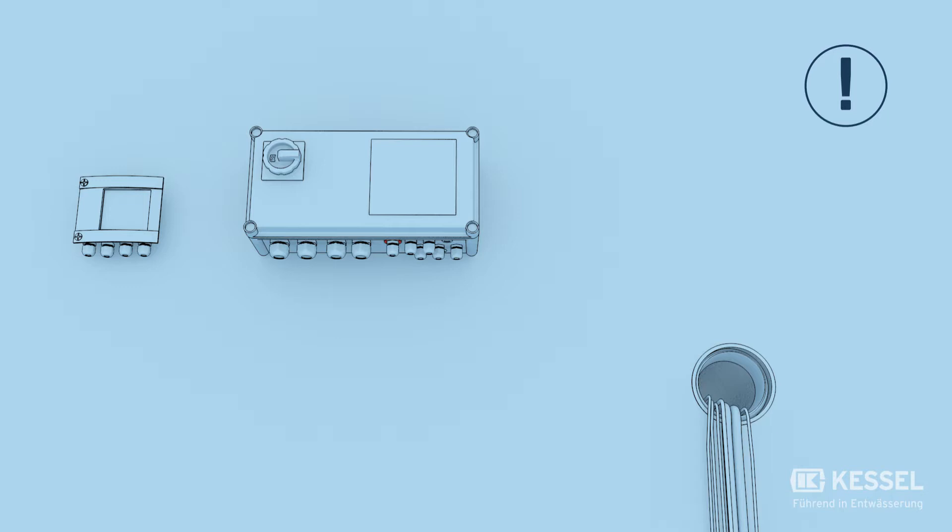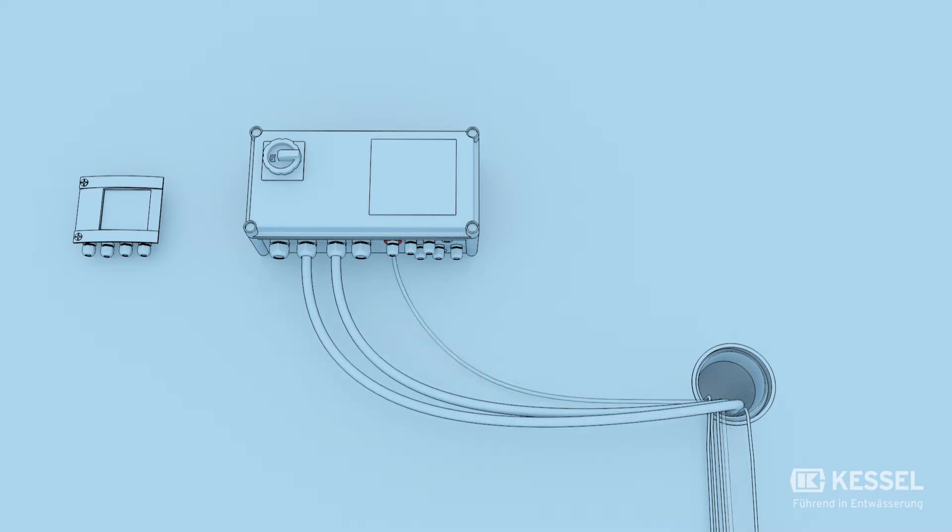Attention! Any of the following work may only be carried out by electricians with the required qualifications. First we connect the pump cables to the Comfort Plus main switch. Then we connect the pressure hose to the main switching device. Now we connect the signal line of the red alarm probe to the main switching device and mark the connection with a red flag. Now we connect the control line of the motor for the backflow valve to the main switching device.